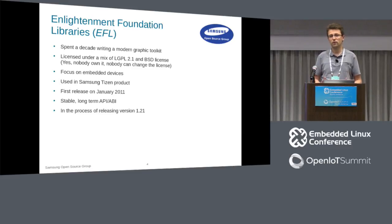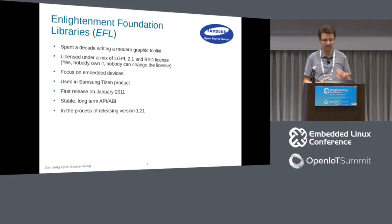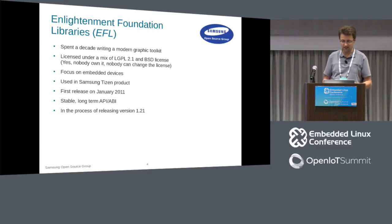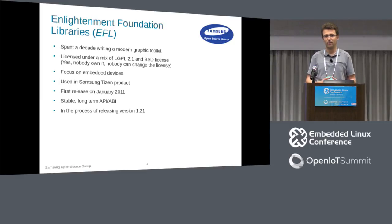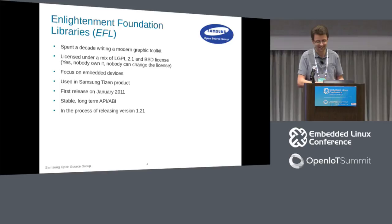Since EFL is now used in products, we have a very strong goal to not break API and ABI, because that means breaking applications. We are in the process of making release 1.21 of EFL — the first number means we have tried not to break the API since 1.0. Sometimes accidents happen, and sometimes people are relying on bugs to make their applications work, so you end up in a situation where fixing a bug breaks an application.